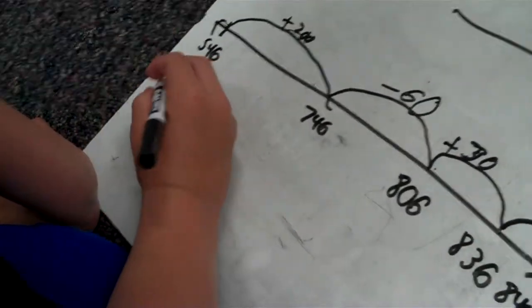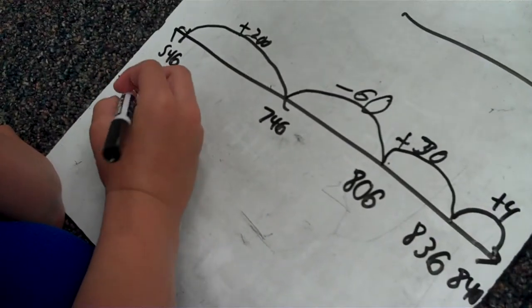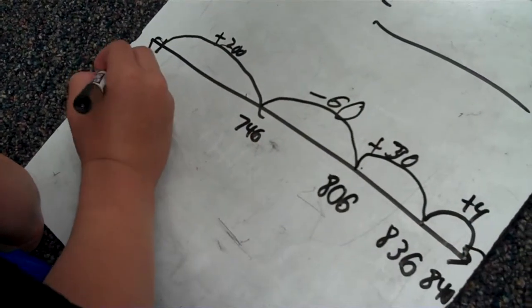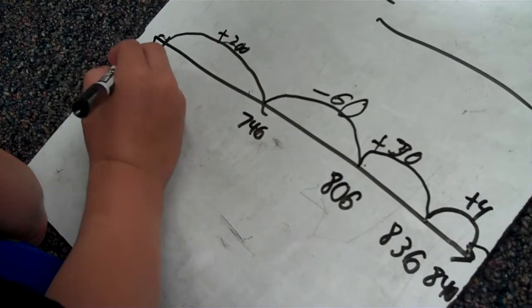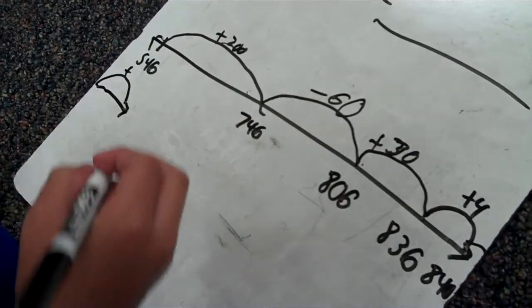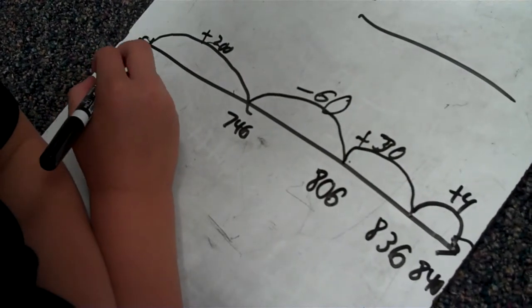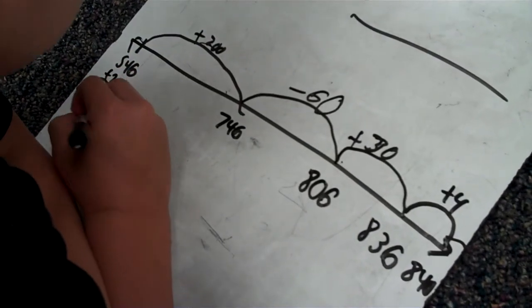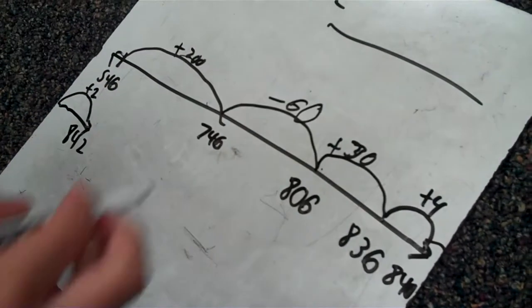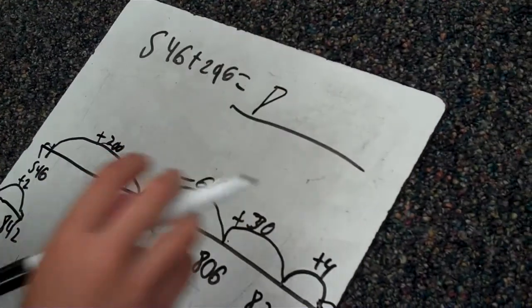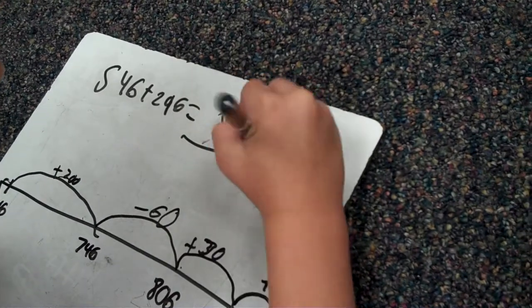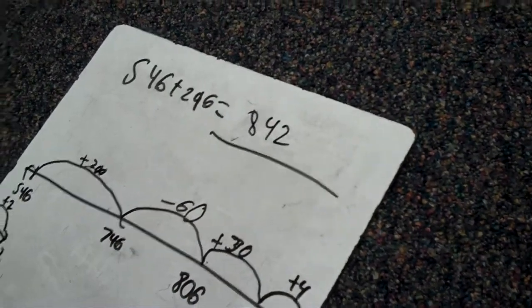And then you, I like how you had to go down there. And then I just plus 842. Whatever's left and usually that's 2. And then we have 842. The answer is 800, wait a minute. 842. Okay. Perfect.